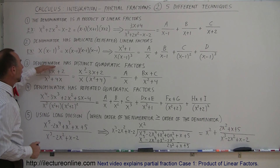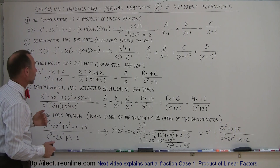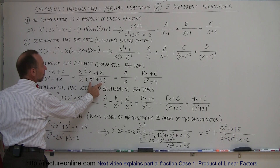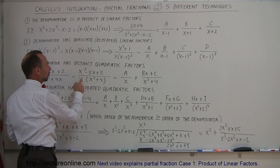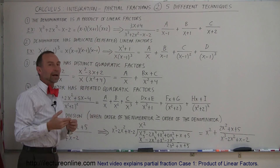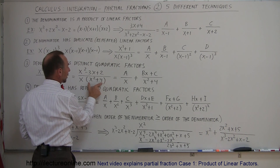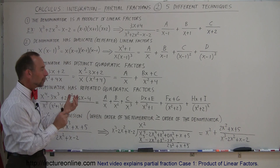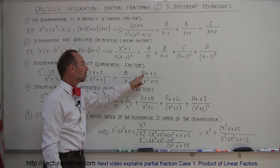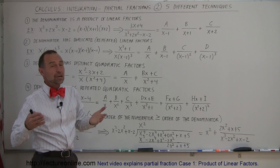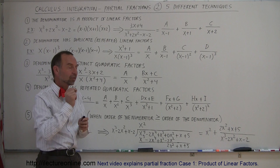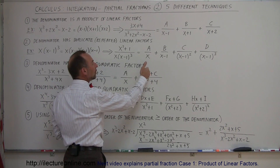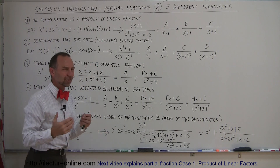The third type is when the denominator has distinct quadratic factors. For example, if you factor out an x you get a linear factor of x and a quadratic factor such as x squared plus 4. For the linear factor you write a over x, just like before. But for the quadratic factor, you write bx plus c in the numerator over the denominator x squared plus 4. Whenever the denominator has a quadratic factor, you write a constant times x plus another constant in the numerator. This makes sense because if you have x squared in the denominator, you want x to the first power in the numerator so it can serve as the differential of the denominator for integration.